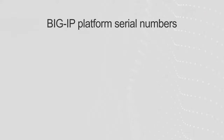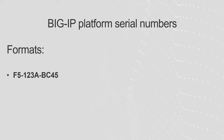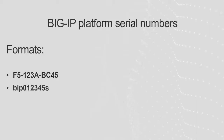The F5 serial number format for BIG-IP platforms varies depending on the product. For some platform models, the serial number begins with F5, followed by a hyphen, then four alphanumeric characters, a hyphen, and four alphanumeric characters, as in this example. For other platform models, the serial number format begins with the letters BIP, followed by six numeric characters, and ends with the letter S, as in this example.